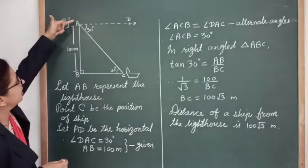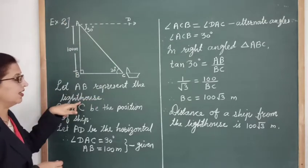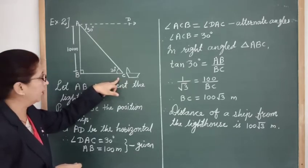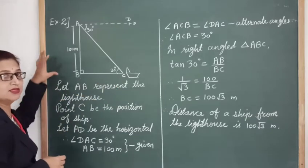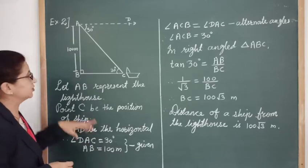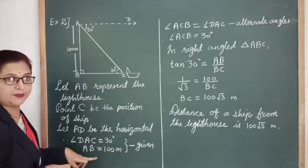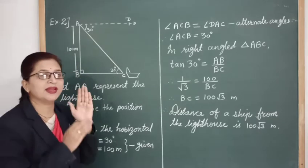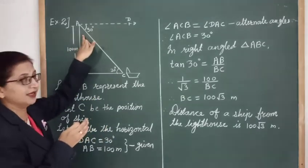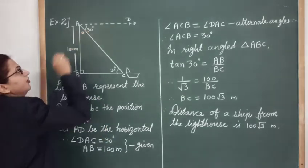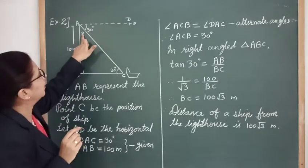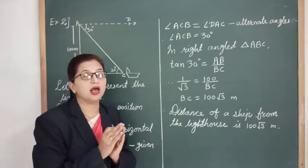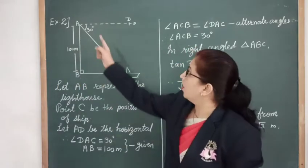Here, segment AP represents the lighthouse, C is the position of the ship, and the height of the lighthouse AP = 100 meters. The angle of depression is given. Many students mistakenly place the angle at the wrong position. Remember: the angle of depression is always formed between the horizontal line and the line of vision. The observer is at point A, so the horizontal line is the straight line from the observer's eyes.